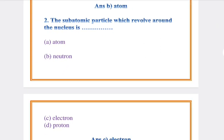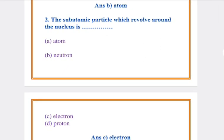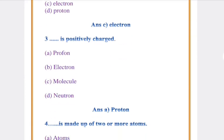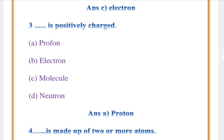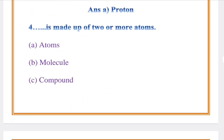Question number 2: The subatomic particle which revolves around the nucleus is? Answer: C, Electron. Question number 3: Das is positively charged. Answer: A, Proton.